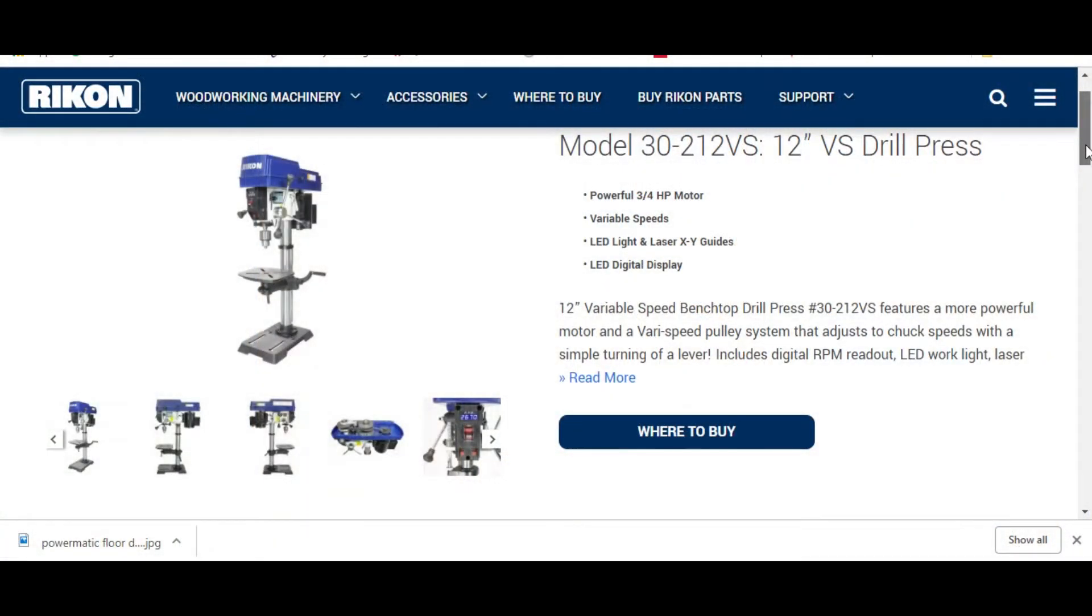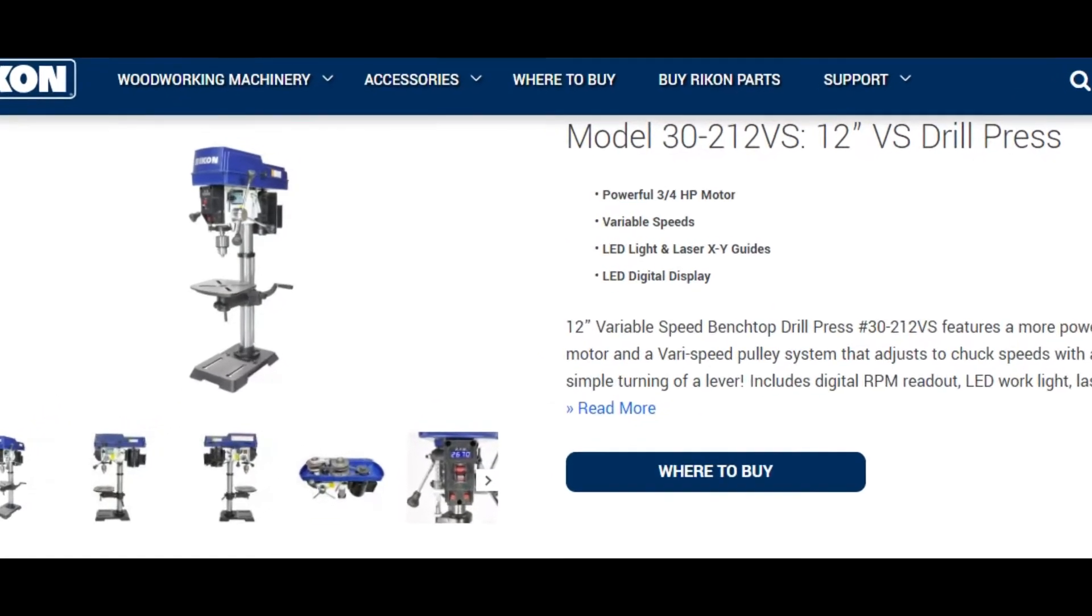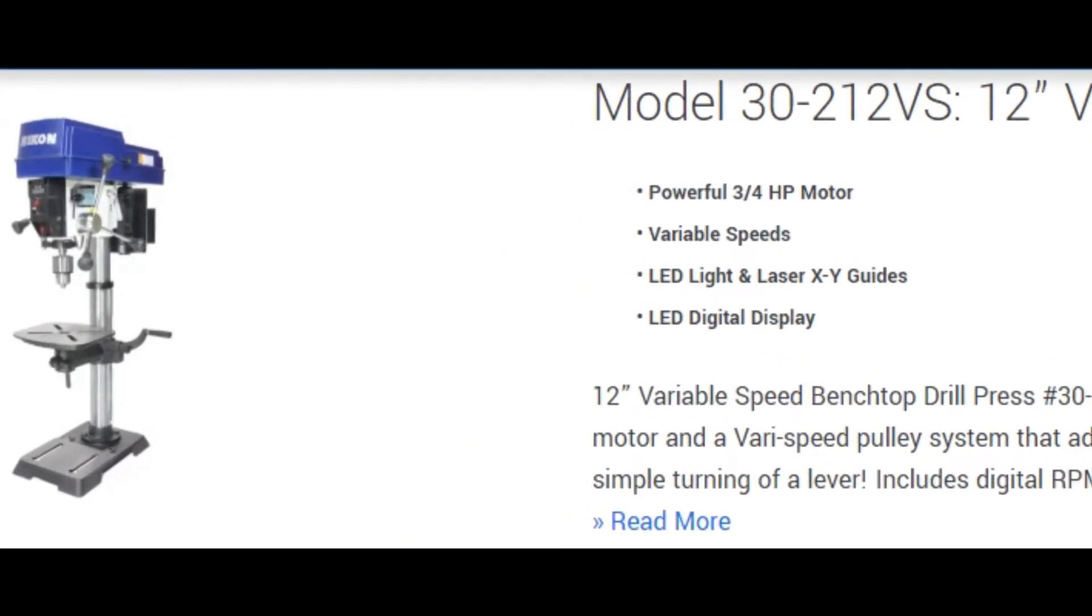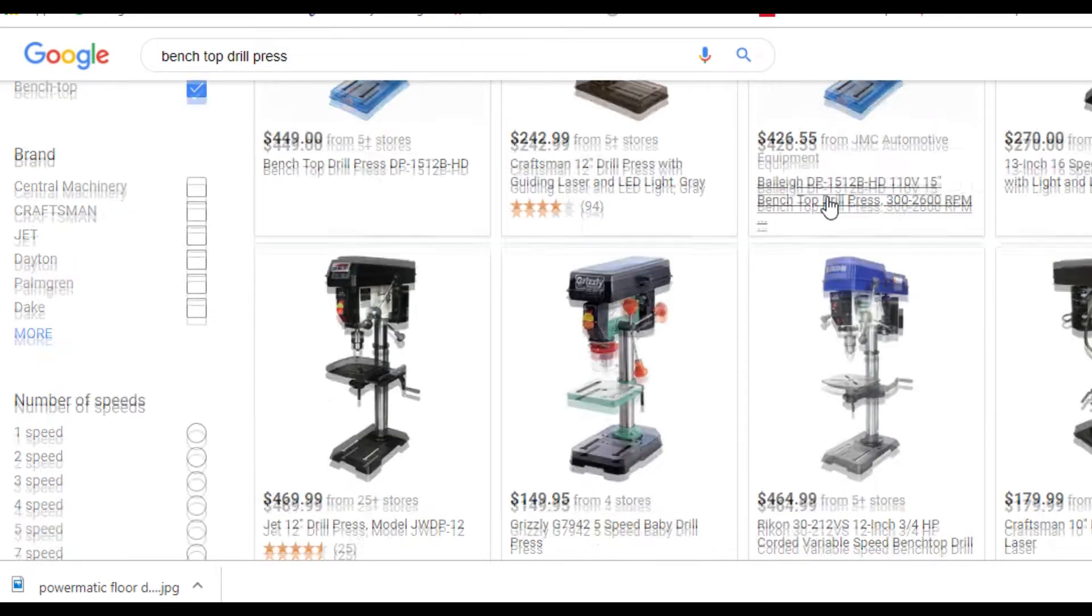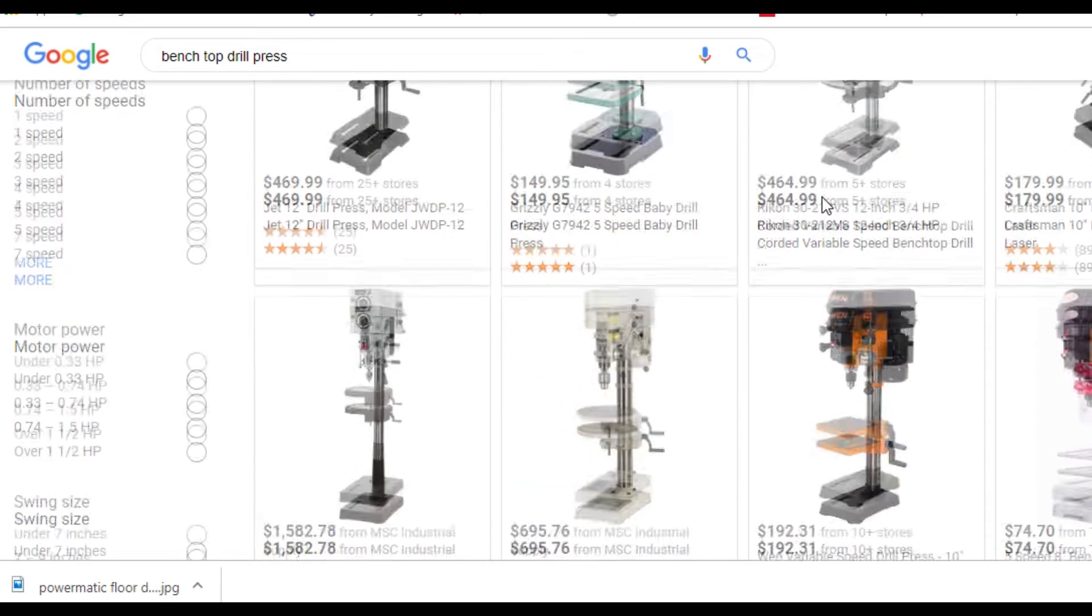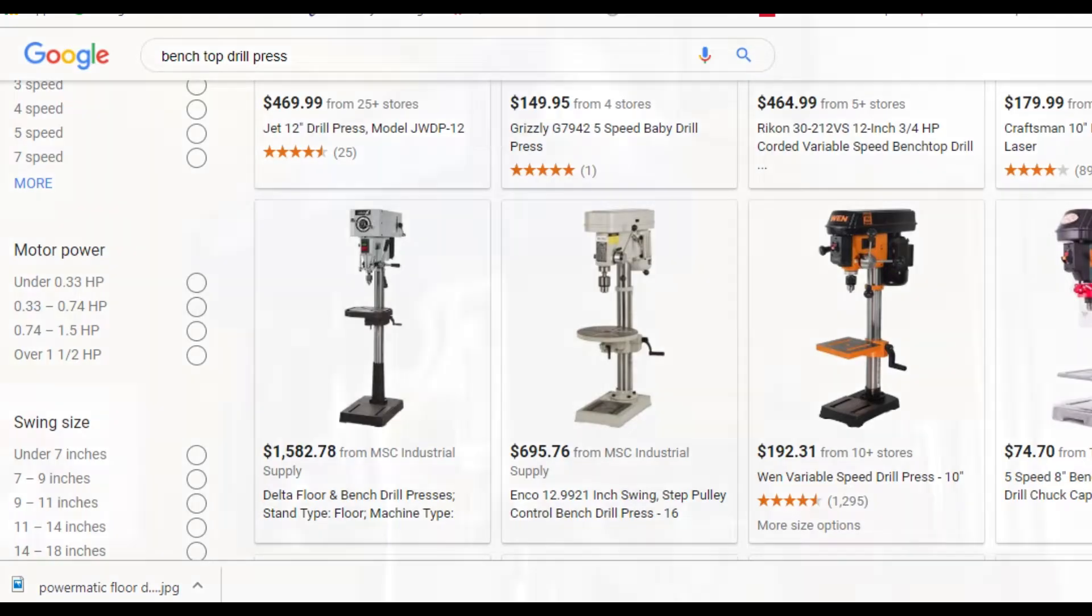I wanted improved power, the ability to slow the drill press way down for difficult to drill materials, and a few convenience features like an LED work light and a laser crosshair. Of course cost was a factor as well. I looked at a lot of different choices. The Rikon press seemed to answer the call.